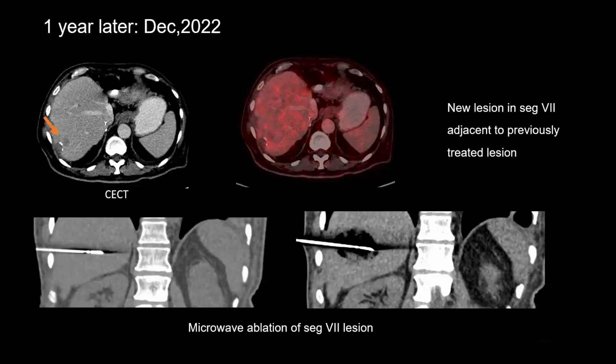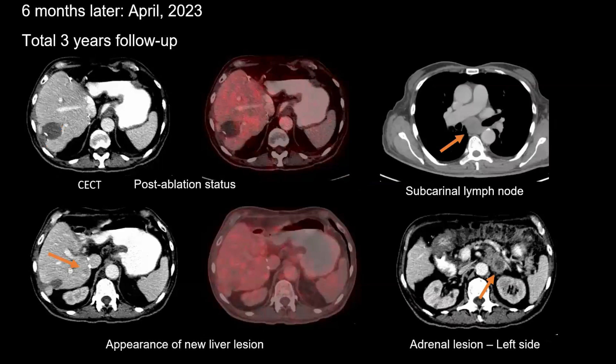On subsequent follow-up, a new lesion appeared adjacent to the previously treated lesion, within the depth of the parenchyma. This was treated with microwave ablation. Three years of follow-up showed good ablation status. However, extrahepatic disease appeared as a subcranial lymph node and an adrenal lesion on the left side, along with an additional lesion in the caudate lobe. At this point, the patient was shifted to systemic therapy.